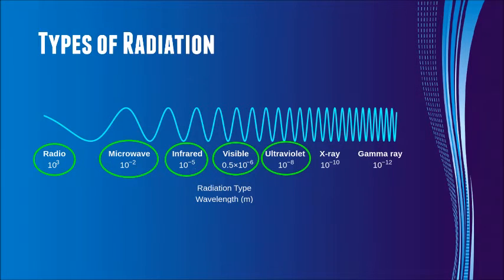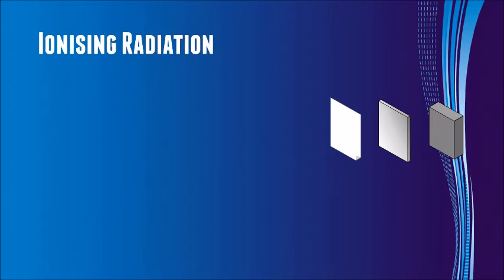In theranostics however, we are interested in ionising radiation. This includes X-rays, gamma rays, alpha particles, and beta particles. In nuclear medicine, theranostics uses gamma, beta, and alpha radiation.